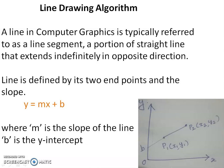Here is the line drawing algorithm. A line in computer graphics is typically referred to as a line segment - a portion of straight line that extends indefinitely in opposite directions. Line is defined by its two endpoints. Suppose P1 is one point with coordinate x1,y1 and P2 is endpoint coordinate x2,y2. We can make a line by joining P1 and P2.